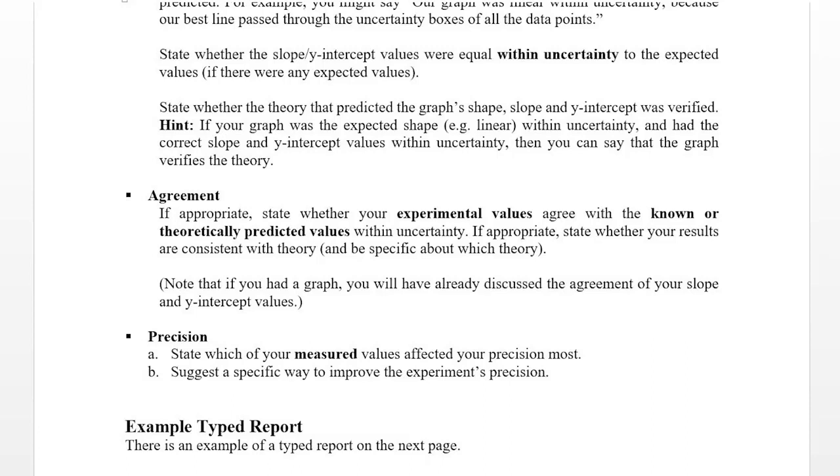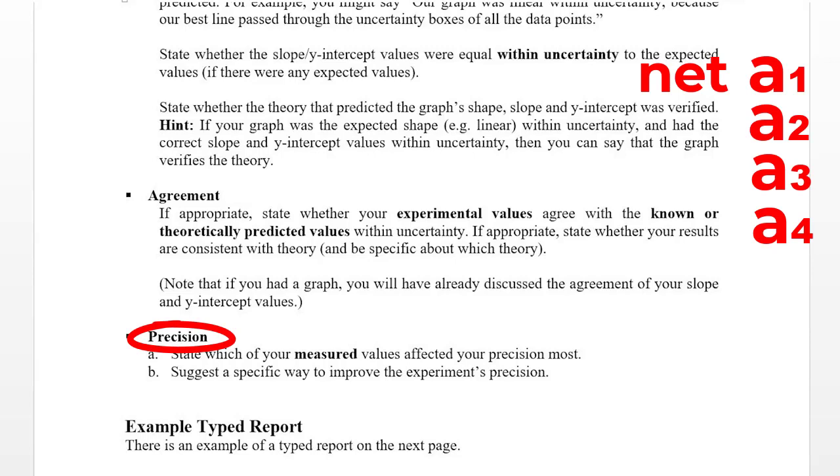So for example, in the acceleration on an incline experiment, you've got one directly measured acceleration. You don't need to do a precision analysis on it because it's obvious which measurement affected it the most. However, you have four theoretically calculated acceleration values. You should do a precision analysis on each of those four. So if it's a calculated value, do a precision analysis on it.